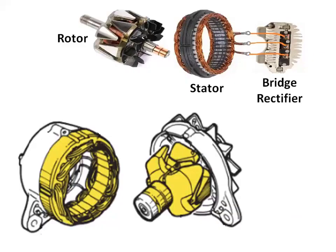The stator is mounted in the frame and is bolted between two end frames so that it is stationary. The stator contains three insulated windings mounted in stator frame slots. There is a very small clearance between the rotor poles and the inside diameter of the stator frame.